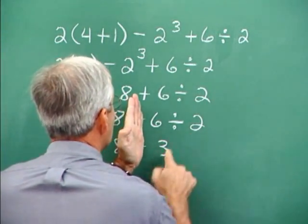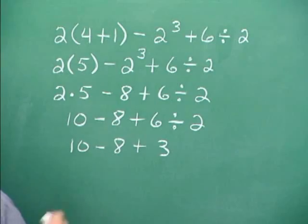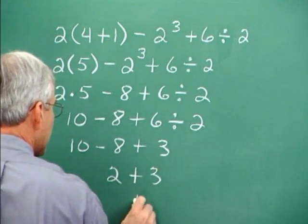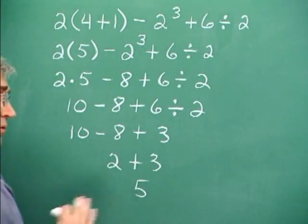And now addition and subtraction from left to right. 10 minus 8 is 2. 2 plus 3, 5. Notice only one operation in each step.